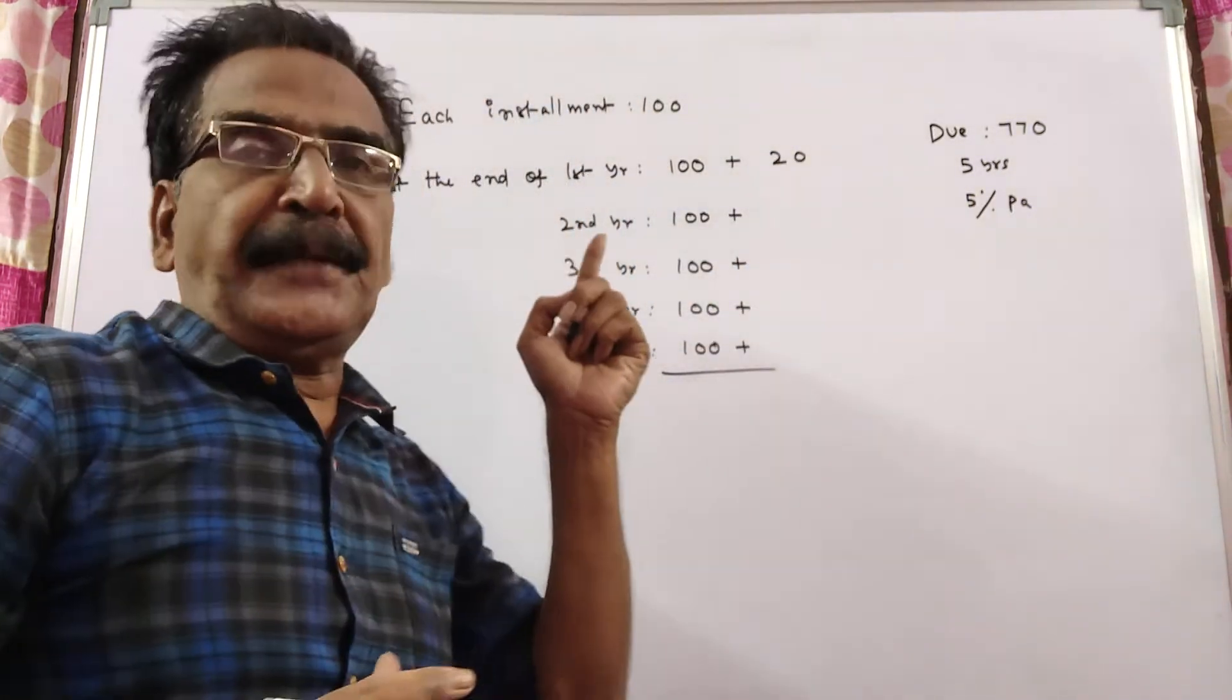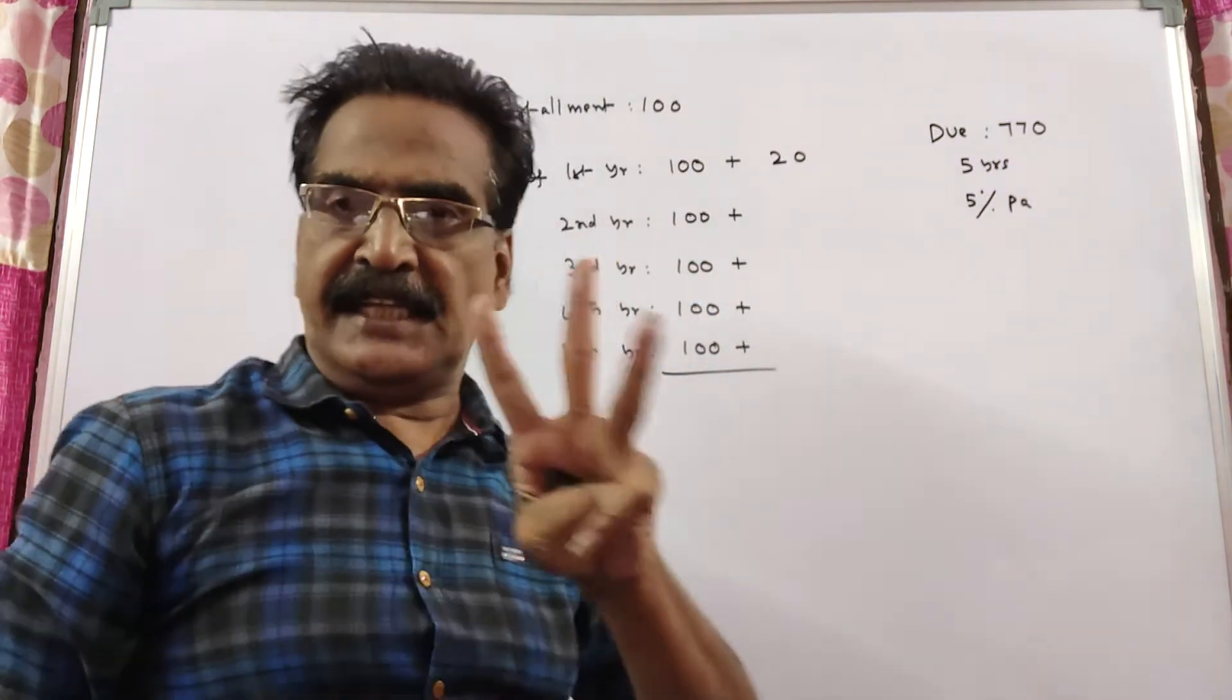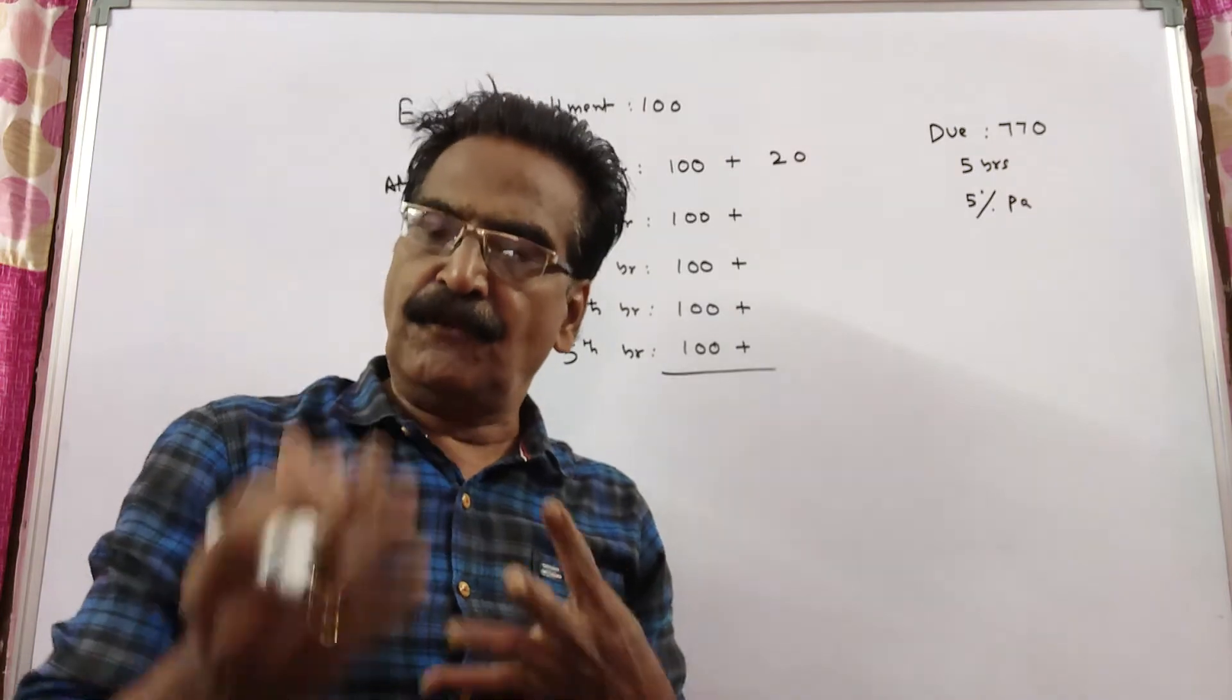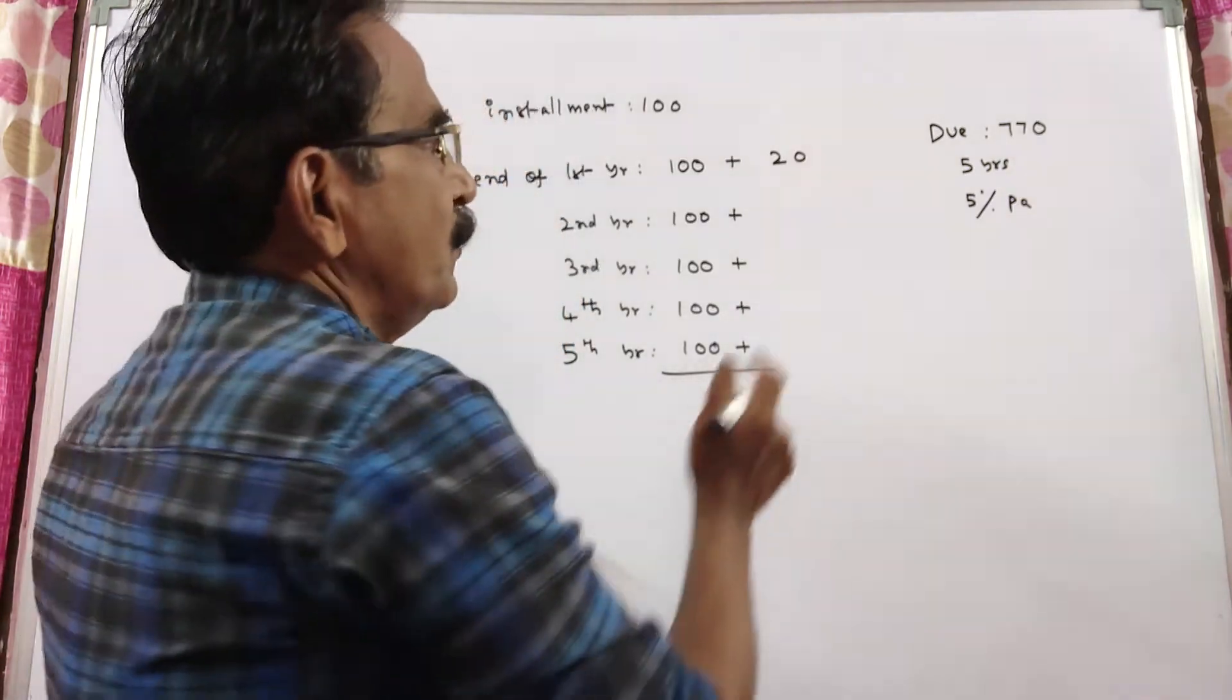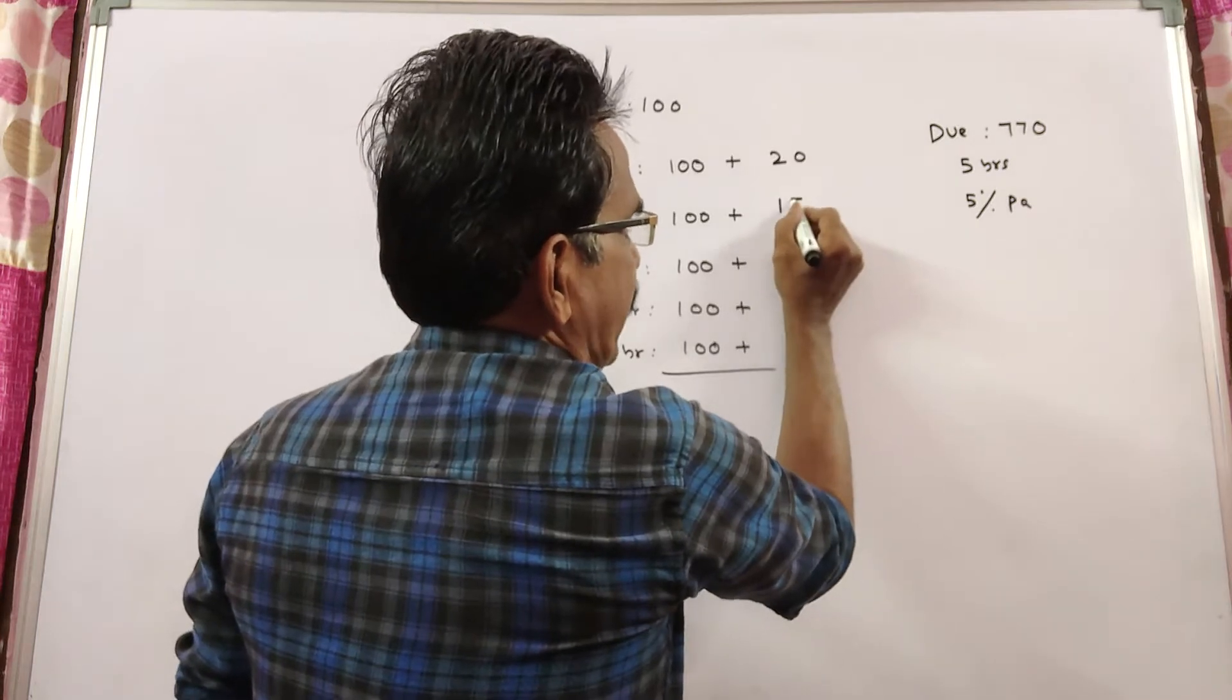The installment you pay at the end of the second year will fetch interest for 3 years - third year, fourth year, fifth year. Per annum interest is 5 rupees. For 3 years, 3 P-Y-s, 15.